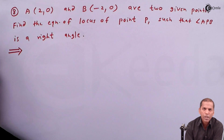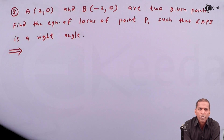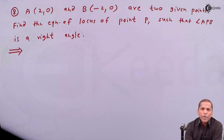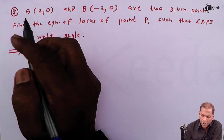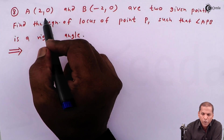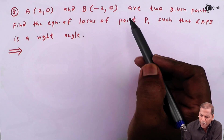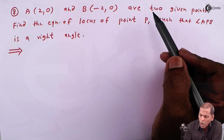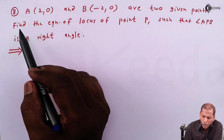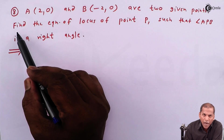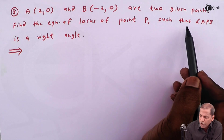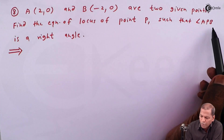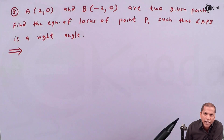Hello friends, now we see problem number 8, which is also based on the equation of locus from the chapter on locus. The problem is: A is at (2, 0) and B is at (-2, 0) are two given points. Find the equation of locus of point P such that angle APB is a right angle.